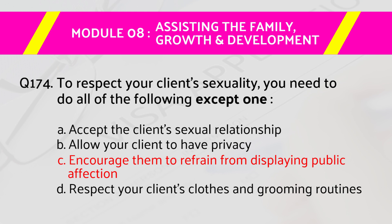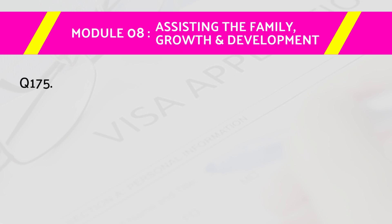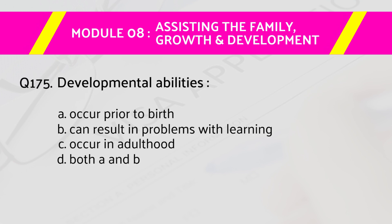The right answer is C, encourage them to refrain from displaying public affection. Question number 175: Developmental abilities — answers are: A) occur prior to birth, B) can result in problems with learning, C) occur in adulthood, D) both A and B.